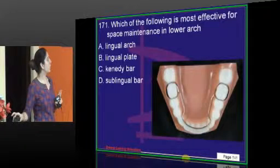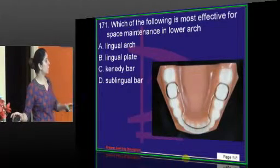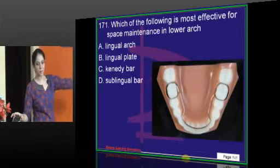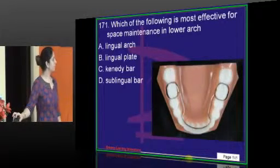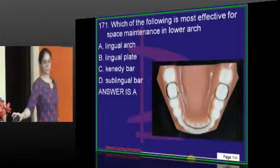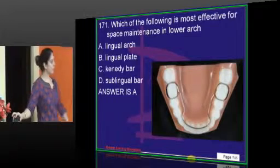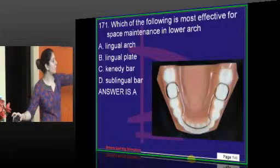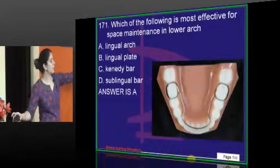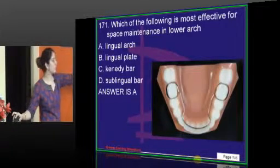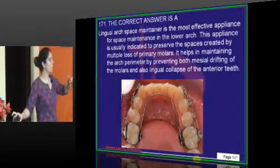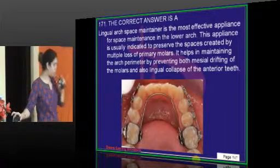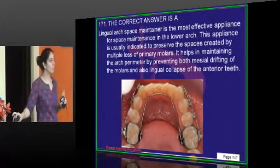The most effective space maintainer for the lower arch is the lingual arch. The wire is very rigid, and you place bands on the sixes and solder the wire to the bands — so it does not move. It is a very good space maintainer for the lower arch, and in most cases you place this.